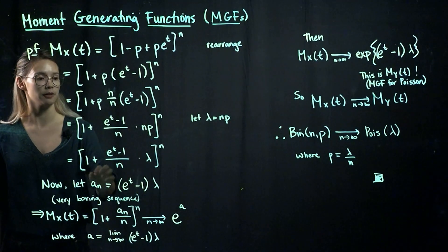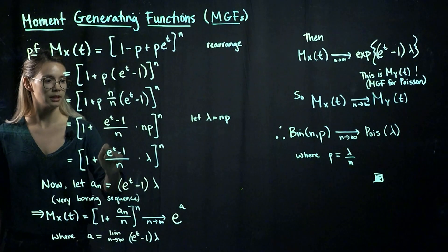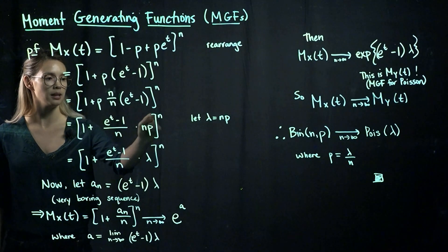All right, so that means that our MGF is 1 plus e to the t minus 1 over n times np to the n.